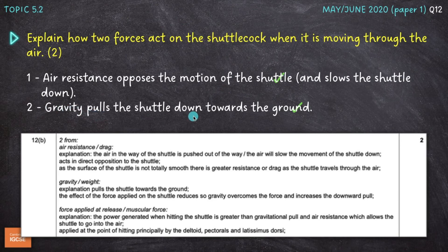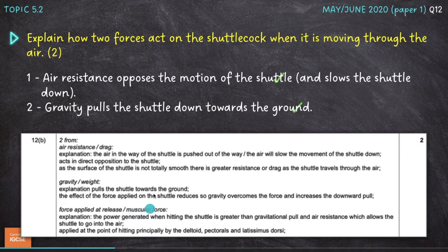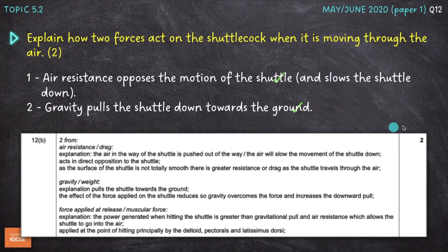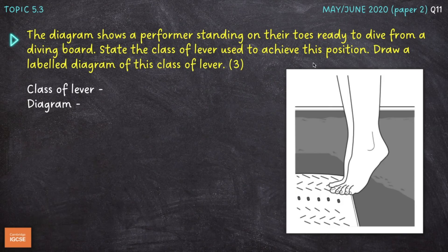The second force is gravity, which pulls the shuttle downwards towards the ground — that's my explanation of how gravity impacts the shuttlecock as it moves through the air. The other force we could have gone for was the force applied at release, or muscular force. There are plenty of different explanations for each of these three forces in the mark scheme, so pause the video and mark your own responses if you wrote something different.